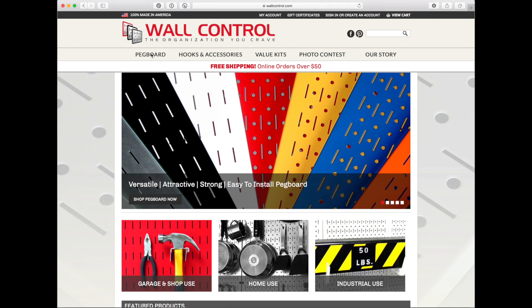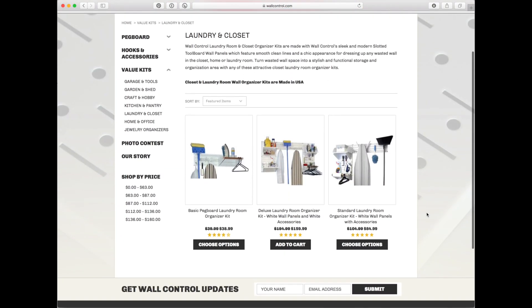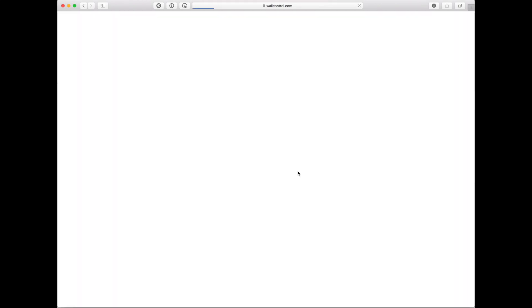On the Wall Control website, you'll find a variety of pegboard options, multiple hooks to choose from. But if you're looking for an already put together kit, you'll find that under the value kits. We're going to use a laundry and closet value kit, the deluxe laundry room organizer kit to be exact.